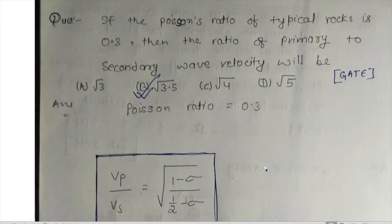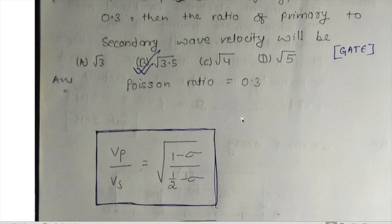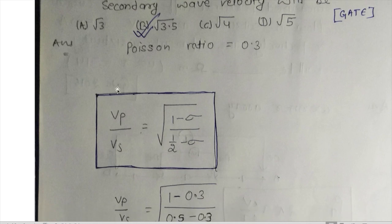If the Poisson's ratio for a typical rock is 0.3, then the ratio of primary to secondary wave velocity will be? First of all, what is Poisson's ratio? Poisson's ratio is the ratio of transverse strain to the axial strain. The Poisson's ratio is given as 0.3 and the formula showing the relation between P-wave velocity and S-wave velocity with Poisson's ratio is as follows.